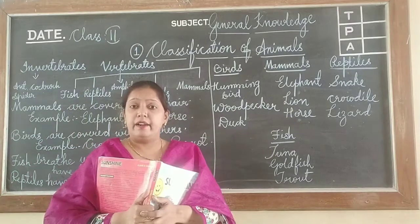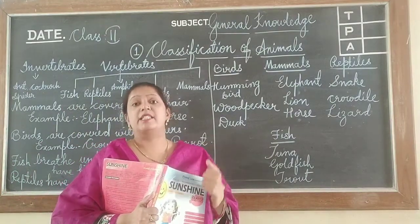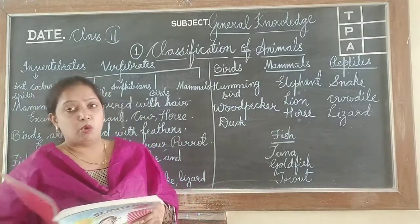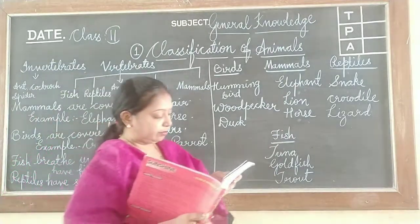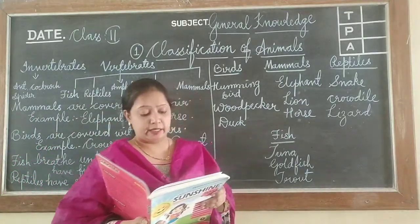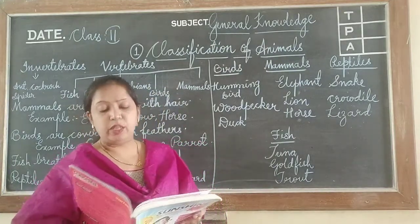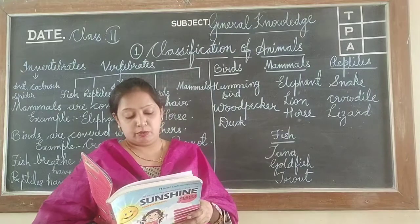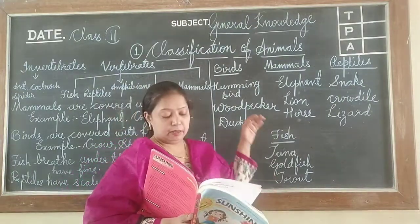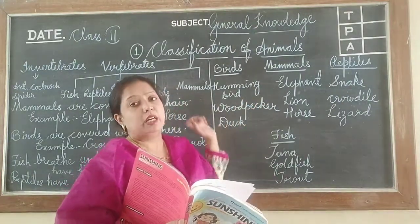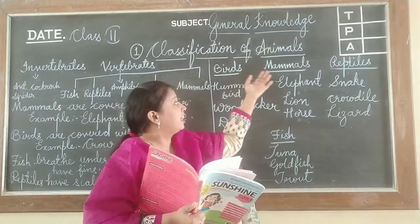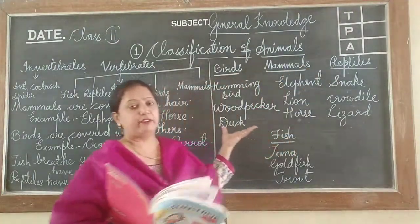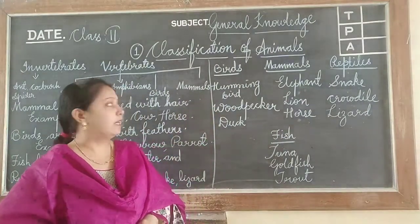Have you seen their skin — how scaly it is? Now we have to go to the exercise. Place each animal from the box into the correct category. Here are the different categories: birds, mammals, reptiles, and fish.